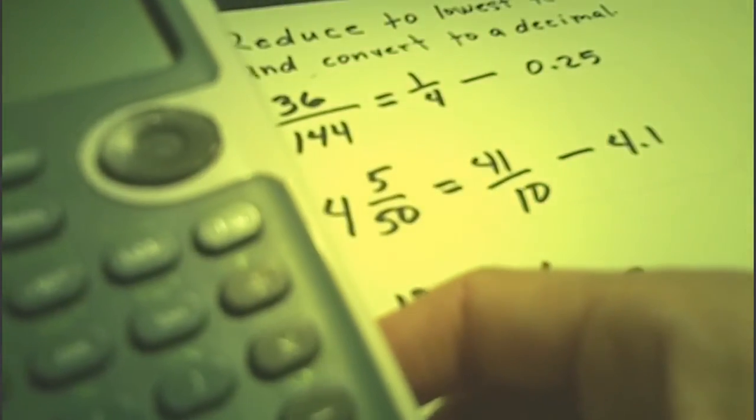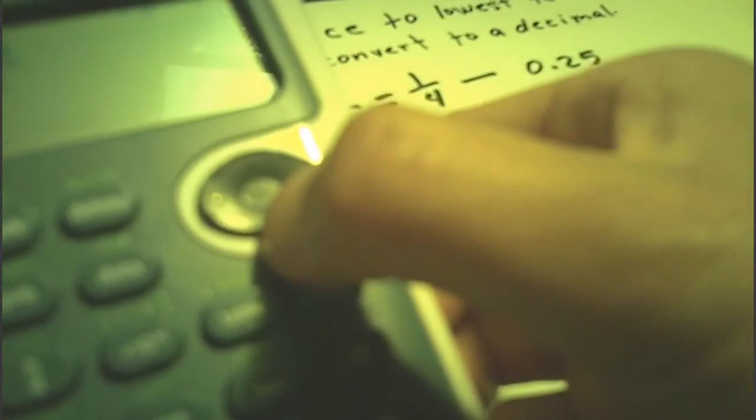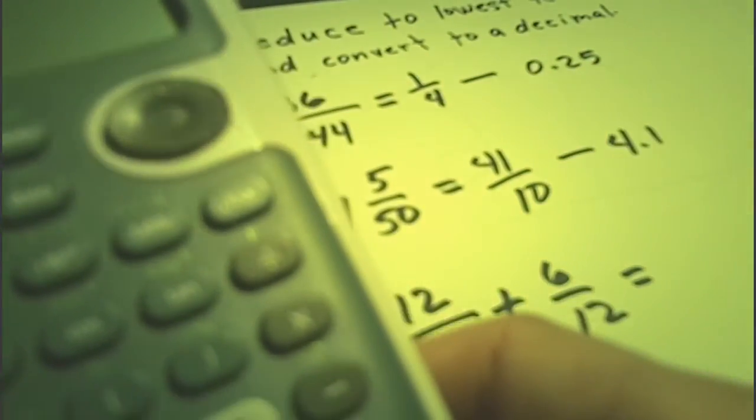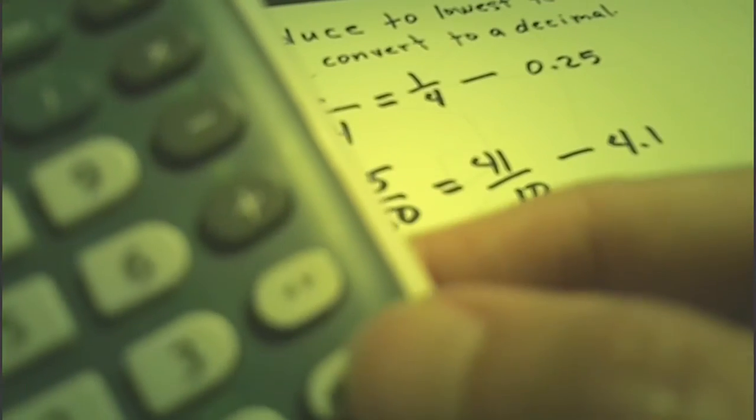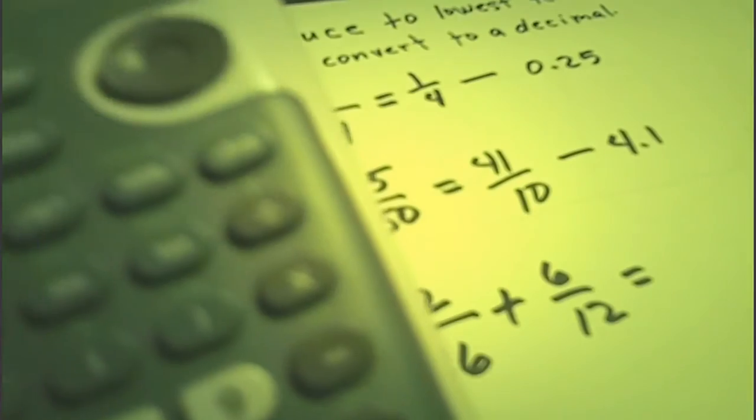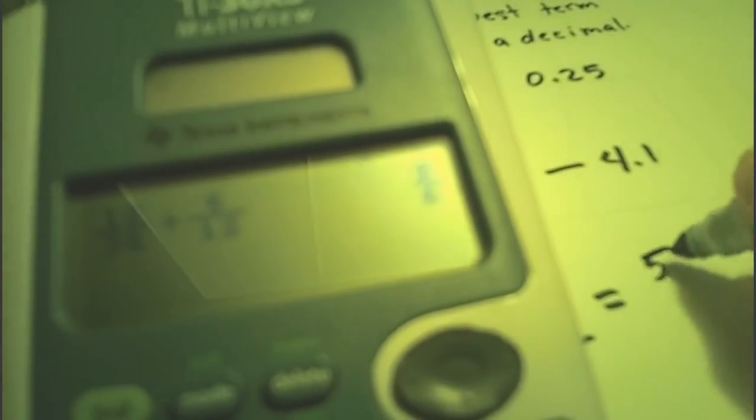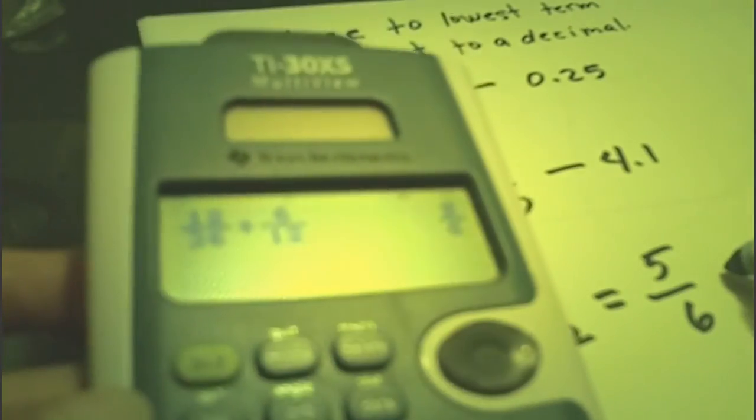Enter the numerator 6, press the arrow down, enter the denominator 12, then press Enter. The answer is 5 over 6. Then convert it to a decimal by pressing toggle — the answer is 0.833.